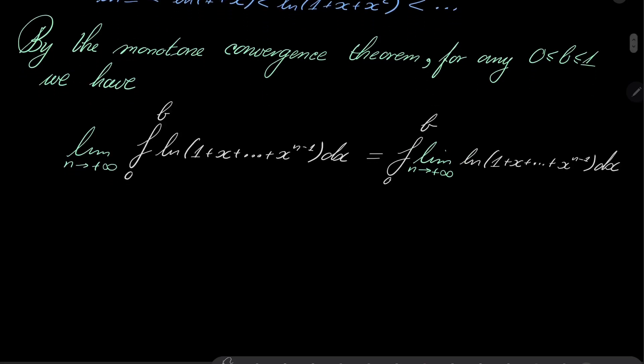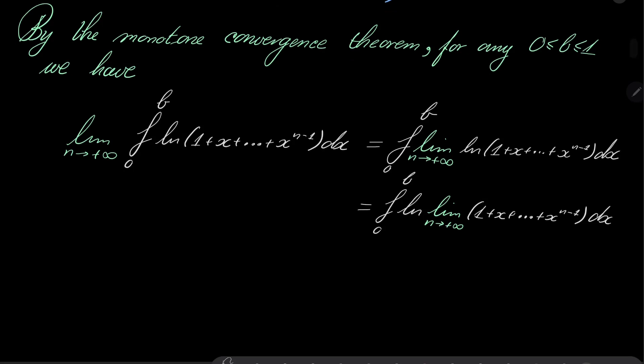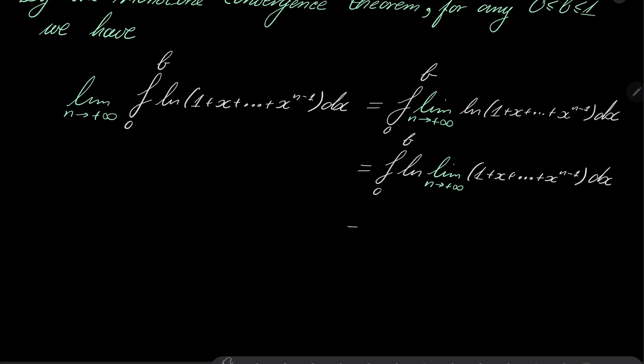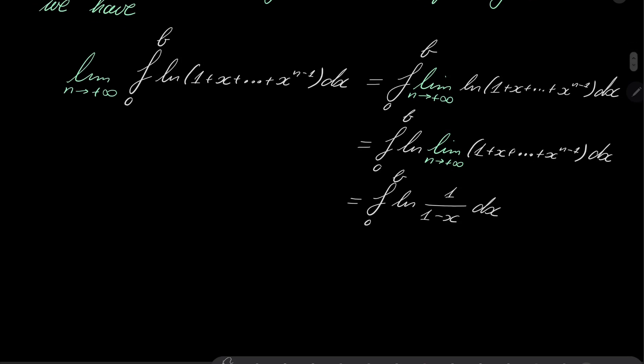All right, but what happens when we put this limit inside? Well, notice that natural log is of course a continuous function, so it's just the natural log of limit, natural log of limit by continuity. And now, since our arguments are between 0 and 1, this thing right here is just natural log of 1 over 1 minus x dx.